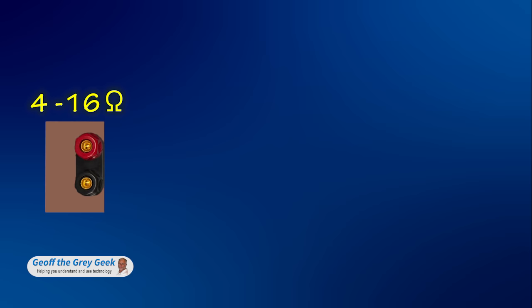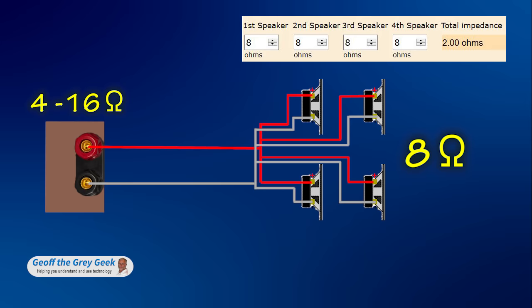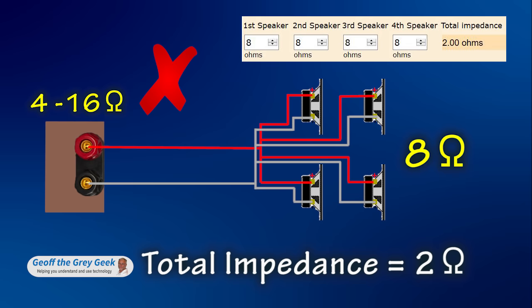Okay so what if you want four speakers connected to the one amp? Let's say you have four 8 ohms speakers wired in parallel. The calculator tells us the total load impedance is only 2 ohms. That's not good for the amp.